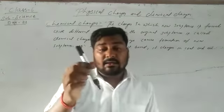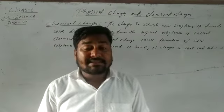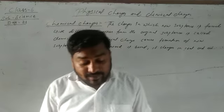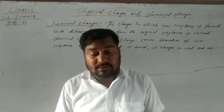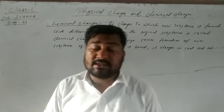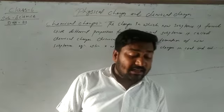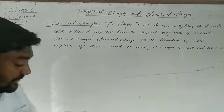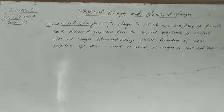Examples of physical changes: magnetizing iron, folding cloth, breaking a pencil. Examples of chemical changes: rusting of iron, formation of curd from milk, burning of food. That's all for today. Next class we will study classification of matter. Thank you, dear students. Goodbye.